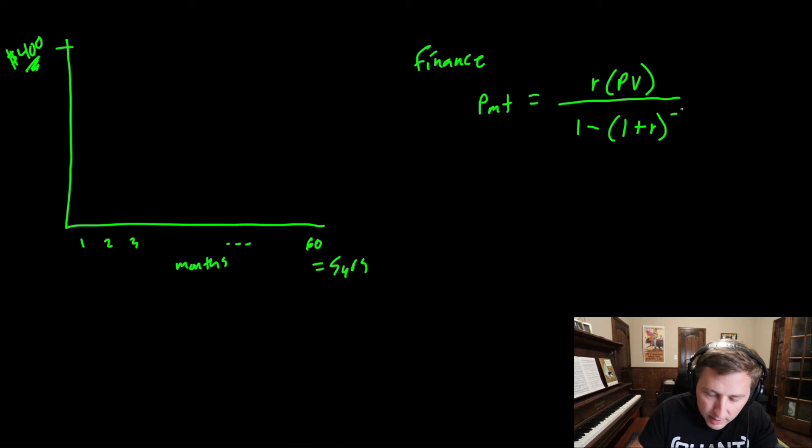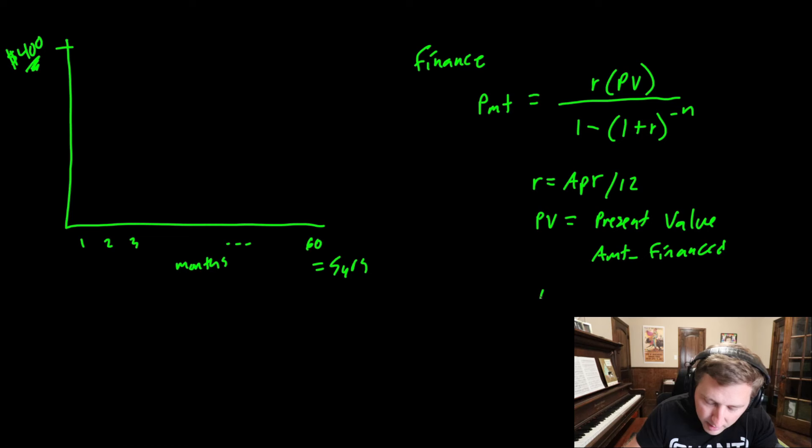So let's just quickly define these. R is going to be your APR, they call this per period. So APR is annual percentage rate, you divide that by 12. That gives you your R here. And then PV is going to be present value in finance terms. Let's say we're doing an auto loan though, this is going to be considered amount financed. And then N here is going to be the number of months.